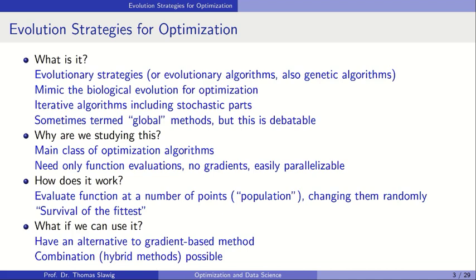We study evolutionary algorithms because they are a main class of optimization algorithms. They need only function evaluations — no gradients — and are easily parallelizable. They evaluate the function at a number of points, using terms from evolution: they call this a population. These points in the parameter space are changed randomly, and the best or fittest survive — the points with the lowest function values. This gives us an alternative to gradient-based methods, and we can also combine both ideas in hybrid methods.